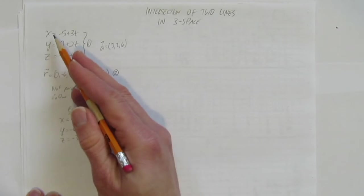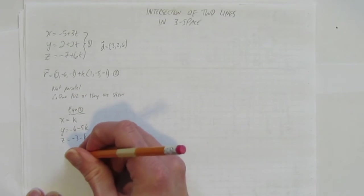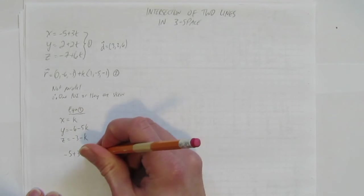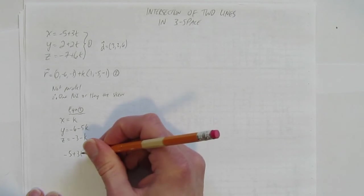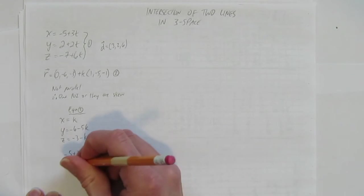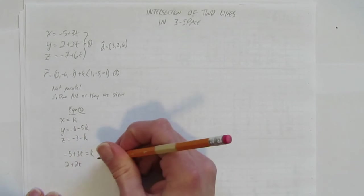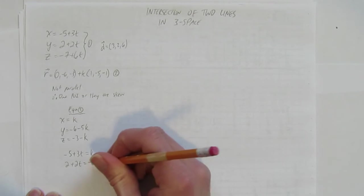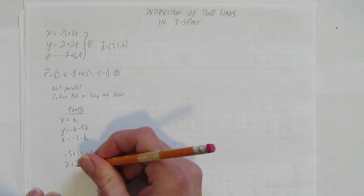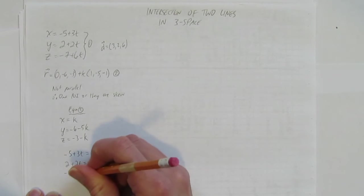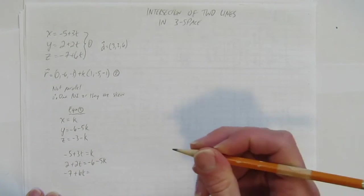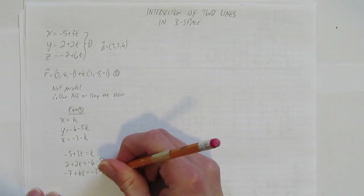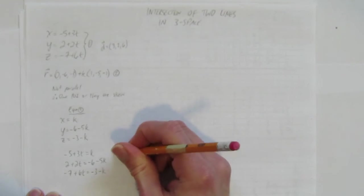In other words, let's set this x equal to this x. So you get negative 5 plus 3t has to equal k. And what's the next one? 2 plus 2t has to equal the other y equation, negative 6 minus 5k. And finally, negative 7 plus 6t has to equal this z equation, negative 3 minus k. Let's call those equations A, B, C.